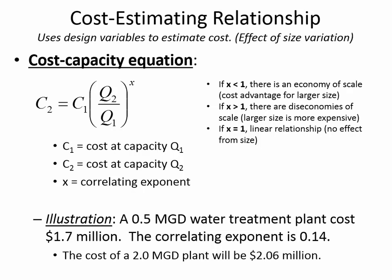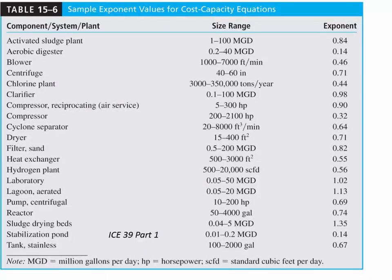A student asks: how is the correlating exponent calculated? Good question. Here is a table from your book of typical correlation exponents for different types of equipment. The way they found this information is you call up vendors. You would call a pump manufacturer and ask: how much is your small pump, your medium pump, your large pump? Then you gather pricing data, fit a curve to that data, and find out what correlating exponent gives the best fit.